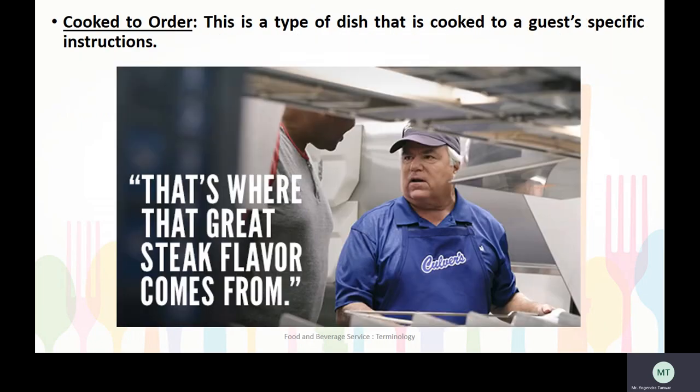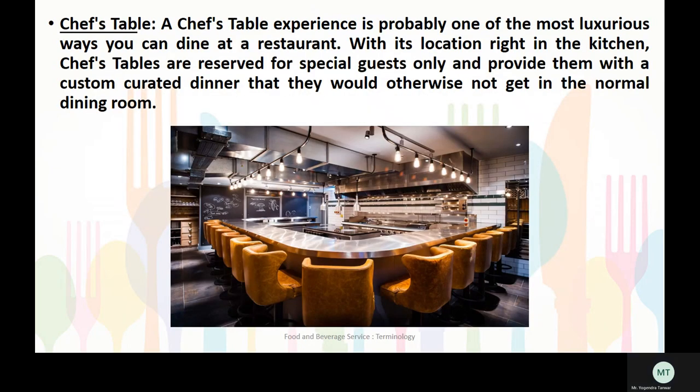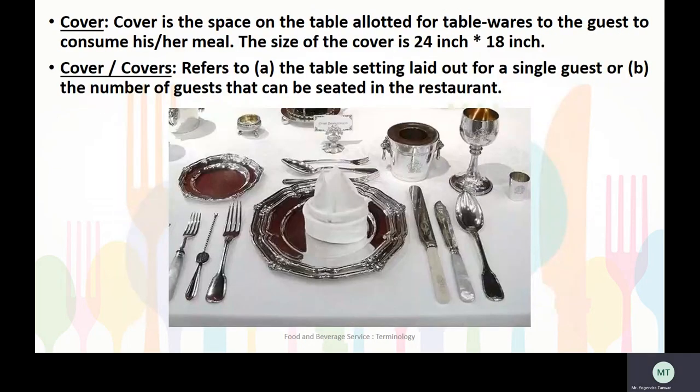The next terminology is cooked to order — a type of dish that is cooked to a guest's specific instruction. Next is cover. Cover refers to the table setting laid out for a single guest, or the number of guests that can be seated in the restaurant. Cover is also the space on the table allotted for tablewares for a guest to consume their meal.